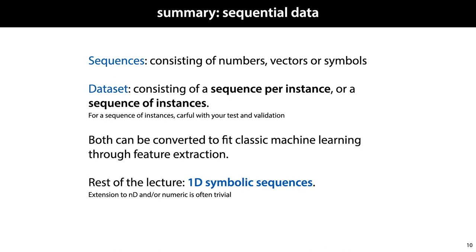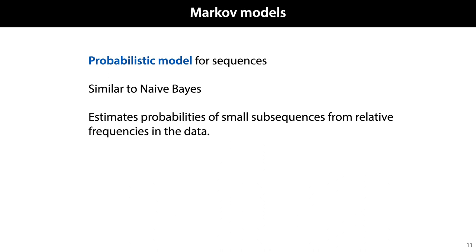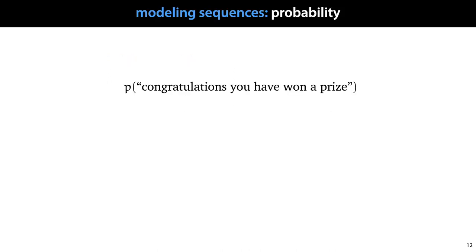In the rest of the lecture we will focus primarily on one-dimensional symbolic sequences, and the extension to higher dimensionalities and numeric sequences is often a trivial one. The first native sequence model that we'll look at is the Markov model. This is a probabilistic way of modeling sequences, very similar in its approach to Naive Bayes, and the fundamental principle is to estimate probabilities of small sequences from relative frequencies in the data.